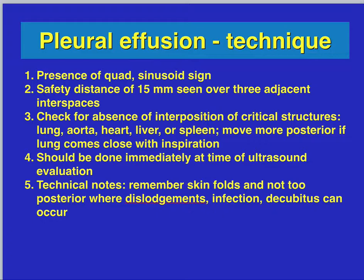For pleural effusion technique: look for the presence of quad and sinusoid signs. You need a safety distance of 15 millimeters seen over three adjacent intercostal spaces — I typically look at multiple spaces and average them. If you're above 1.5 centimeters, you have a safety margin to perform a thoracentesis for fluid collection or drainage. Check for absence of critical structures like the lung, aorta, heart, and liver — that's why you should always identify the diaphragm. The evaluation should be done immediately and repeated right before placing the chest tube. Avoid skin folds and placing too posteriorly, as this risks dislodgement, infection, and decubitus ulcers. Most of the time we're placing chest tubes in the mid-axillary line.